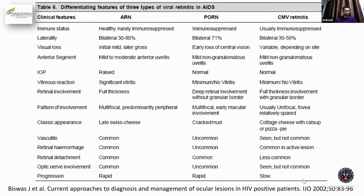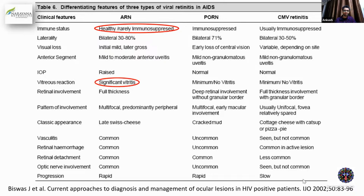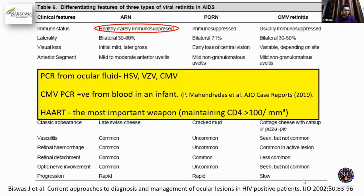Another table differentiates ARN from PORN and CMV retinitis. PORN — progressive outer retinal necrosis — is becoming a history; I don't know when I last saw a PORN case, maybe more than five years ago. ARN occurs in healthy patients, whereas PORN and CMV occur in immunocompromised patients. ARN has significant vitritis, whereas PORN and CMV have less pronounced vitritis. In PORN, there are deep retinal lesions without retinal borders. PCR is mandatory for retinitis cases unless you are 100% sure it is HSV or VZV. If the patient comes with a history of chickenpox and you see ARN, you can treat as VZV. Otherwise, it is always better to have PCR documentation for ARN cases.